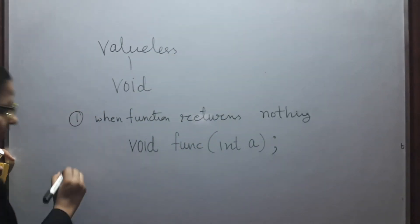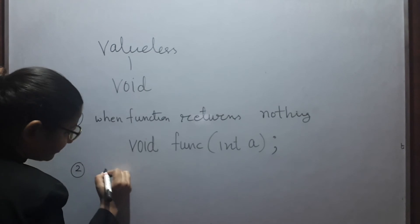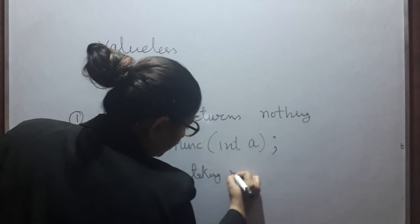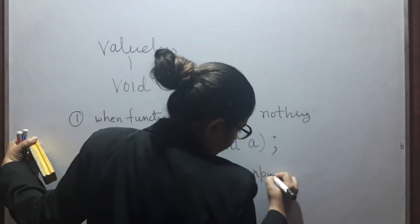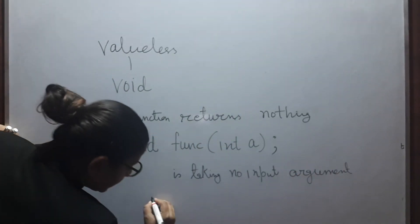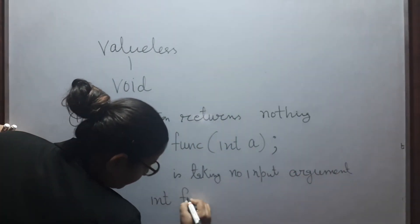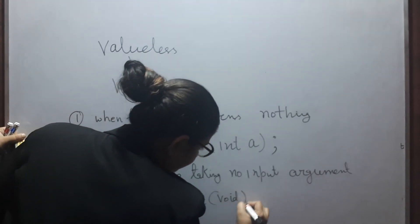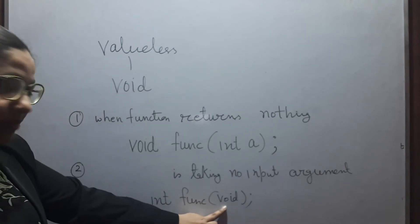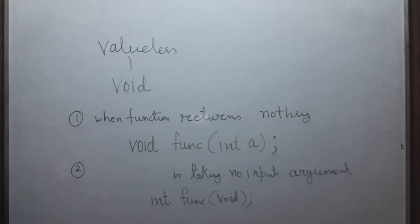Second time void is used when function is taking no input argument. Which means int found void. When we are having void as return type, this means the function is returning nothing. When you have void as the input argument, that means this function is taking no input argument.